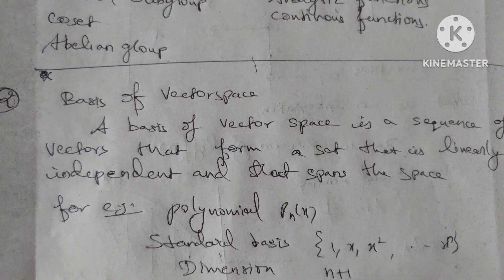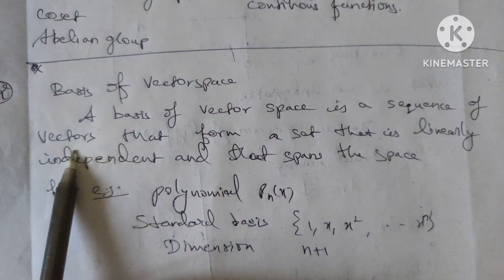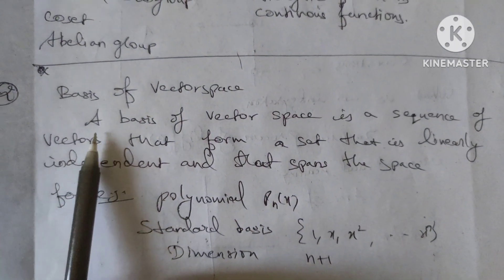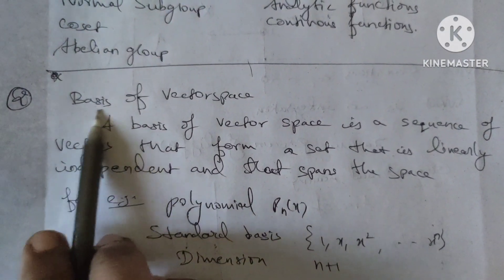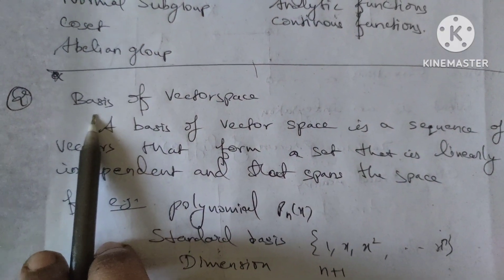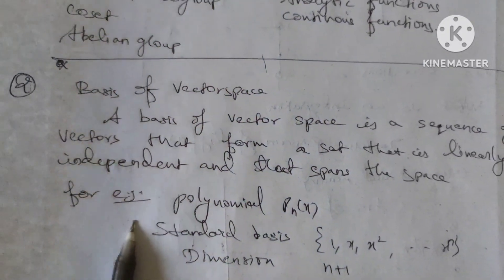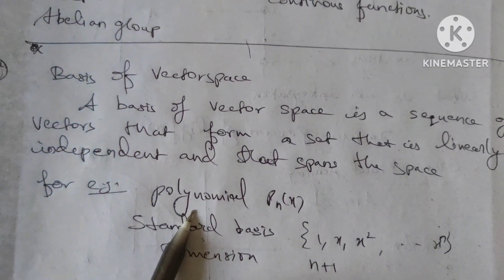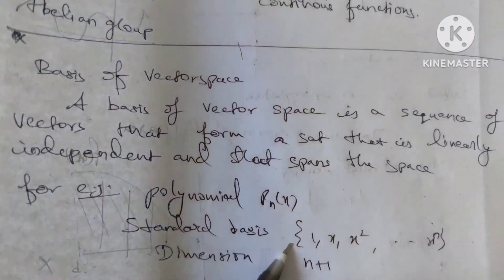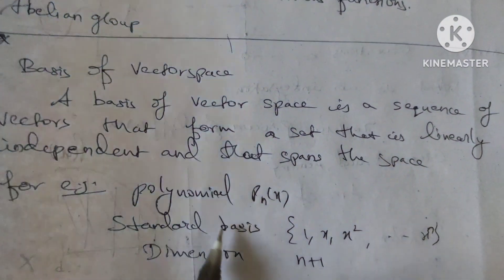The next question: what is the basis of a vector space? A basis of a vector space is a sequence of vectors that form a set that is linearly independent and that spans the space. For example, for the vector space of polynomials, the basis is {1, x, x², ..., xⁿ}, which is linearly independent and spans the space.